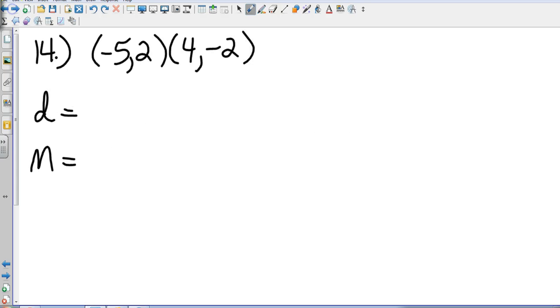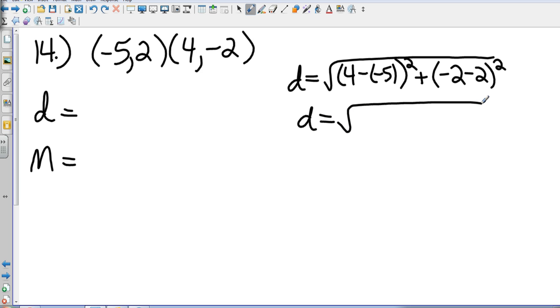Now, I want to do number 14, because it's got some negative numbers in there, and I want to make sure we look at the transition of those. So, let's go distance is going to equal the square root of 4 minus a negative 5 squared plus negative 2 minus 2 squared. So, that's going to give me 4 minus a negative 5, that's 4 plus 5. So, that gives me 9 squared, which is 81. And then negative 2 minus 2 gives me negative 4. Negative 4 squared is 16. So, that gives me a distance of the square root of 97.